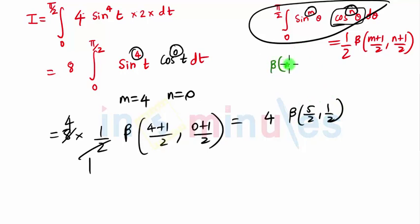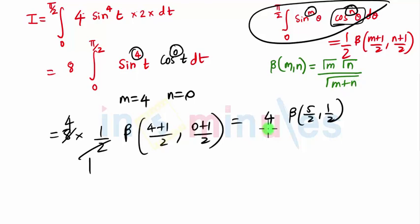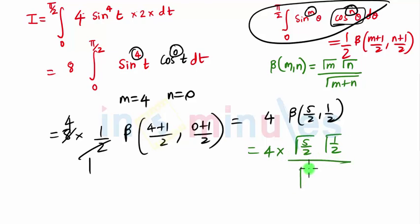For this Beta we are going to use the relationship between Beta and Gamma, which states that Beta(m, n) is nothing but Γ(m)·Γ(n) / Γ(m+n). So we get 4 times Γ(5/2)·Γ(1/2) upon Γ(m+n). The addition of the two terms is 5/2 + 1/2 = 6/2 = 3.